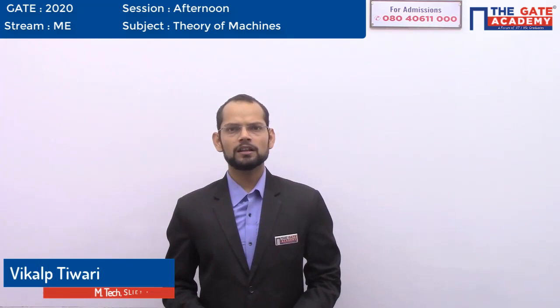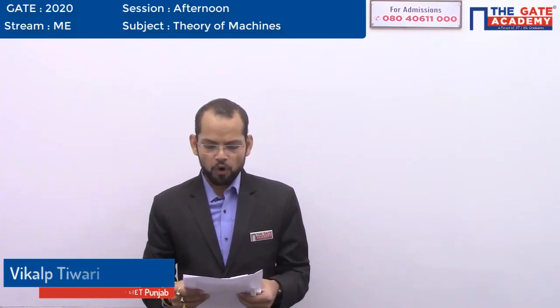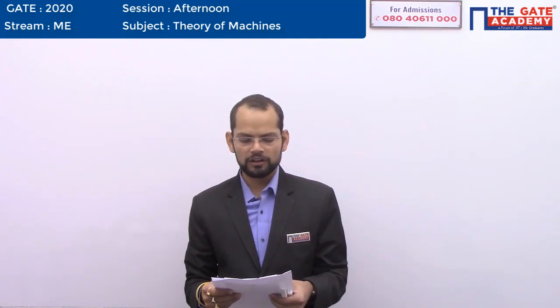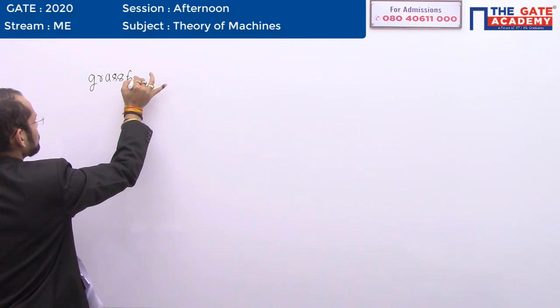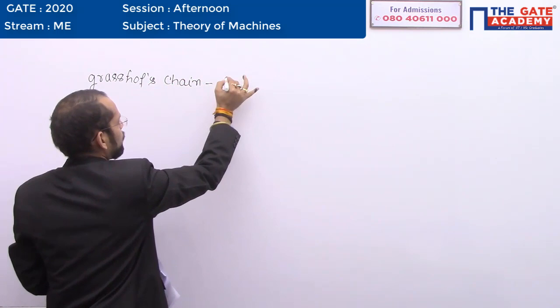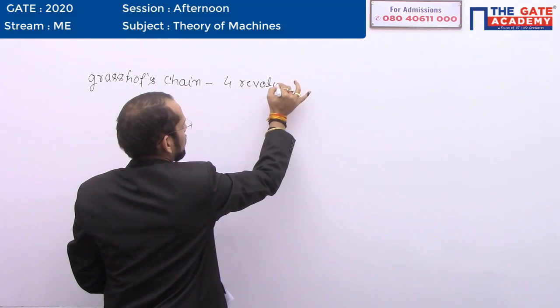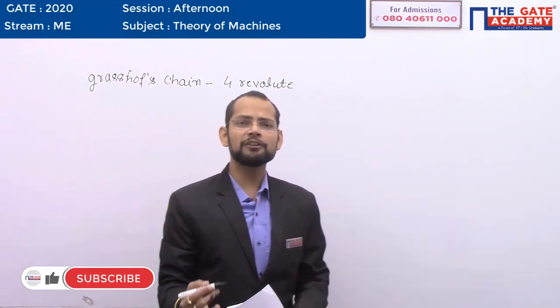The first question: the number of qualitatively distinct kinematic inversions possible for a Grashof chain with four revolute pairs is what? In this question we are asked about qualitatively distinct kinematic inversions for a Grashof four-bar chain. A Grashof chain having four revolute pairs means it is nothing but a four-bar kinematic chain. The number of different inversions possible for a four-bar kinematic chain is only three.